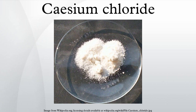Cesium chloride occurs naturally in mineral waters and is an impurity in carnalite, sylvite, and canite. Less than 20 tons of CsCl is produced annually worldwide, mostly from a cesium-bearing mineral pollucite.